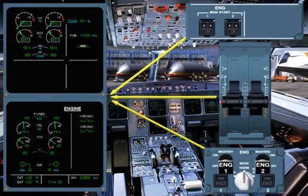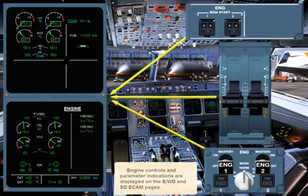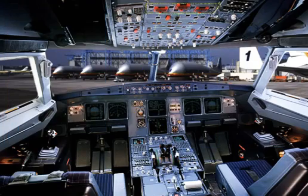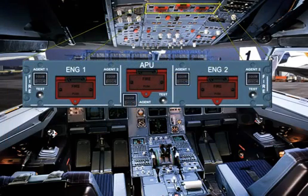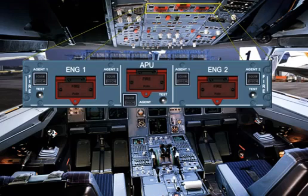Engine controls and parameter indications are displayed on the engine warning display and system display ECAM pages. The engines are also equipped with a fire protection system. You will see the complete operation of this system in the fire protection chapter.